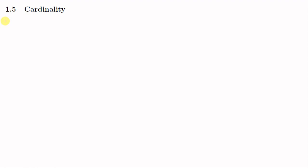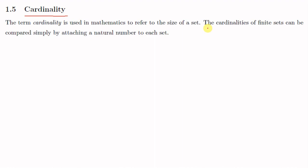We shall now move on to our next section, Section 1.5: Cardinality. We have heard this term cardinality in our smaller classes. There we learned that the cardinality of a finite set is the number of elements in that set — simply the size of the set. So if a set has 5 elements, then the cardinality of that set is 5. The cardinality of two finite sets can be compared by attaching a natural number to each set.